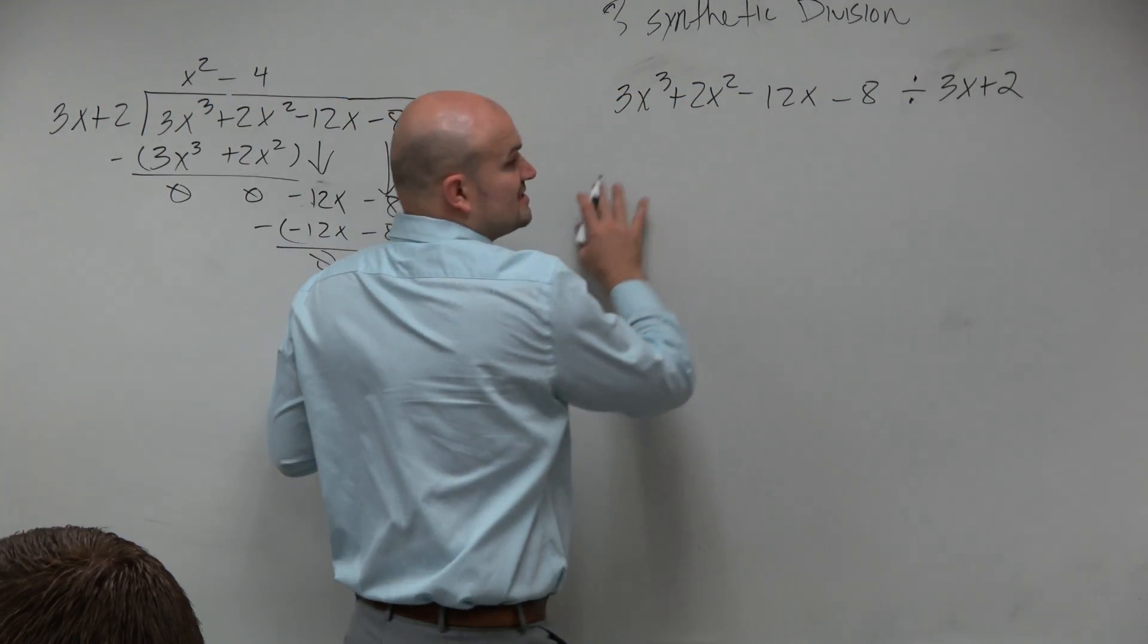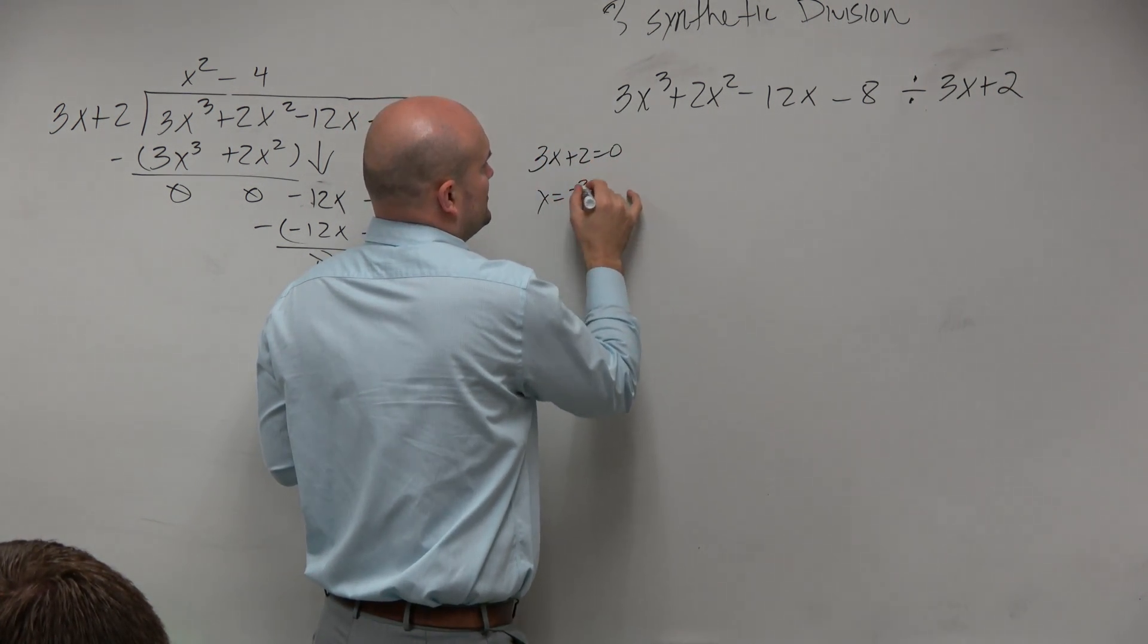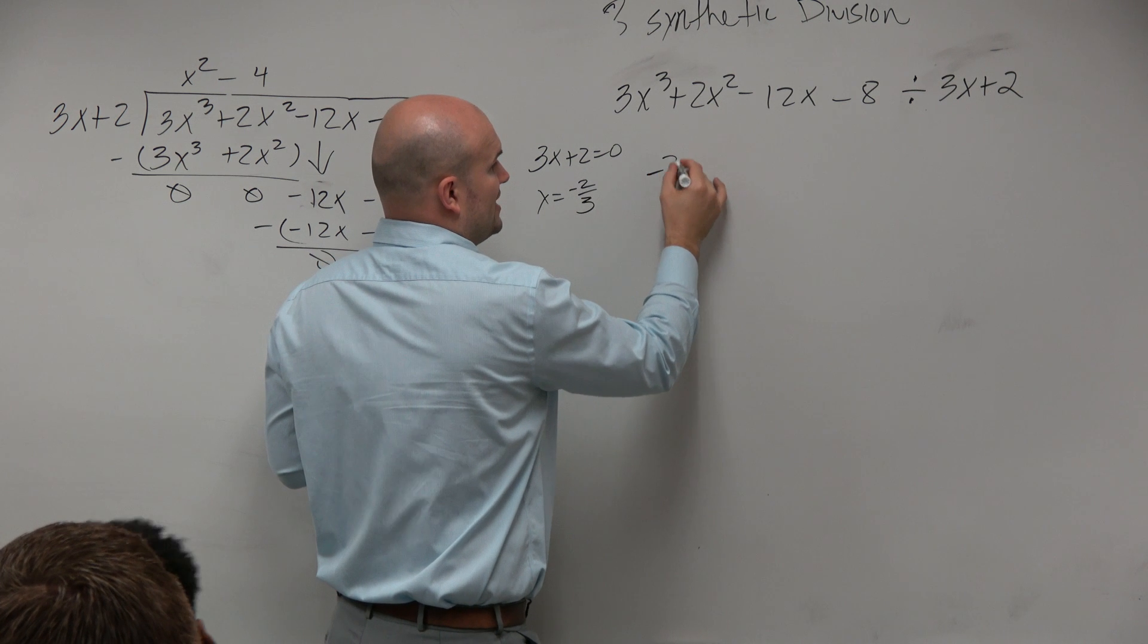Cool. That means if I was going to set that equal to 0 and solve, 3x plus 2 equals 0, x is equal to negative 2 thirds. OK, so that number is outside.